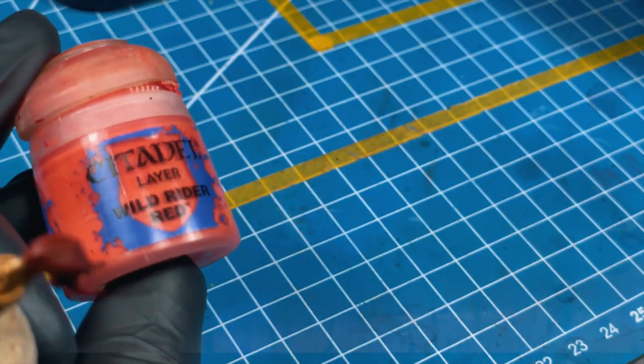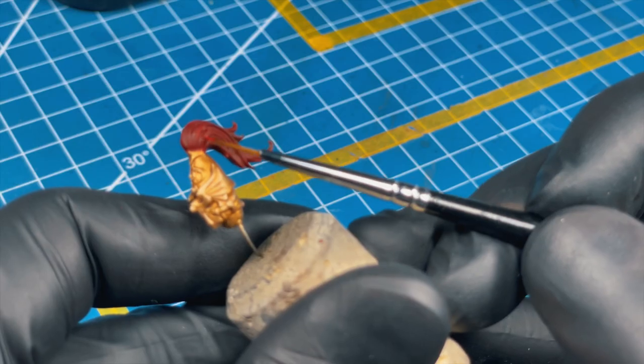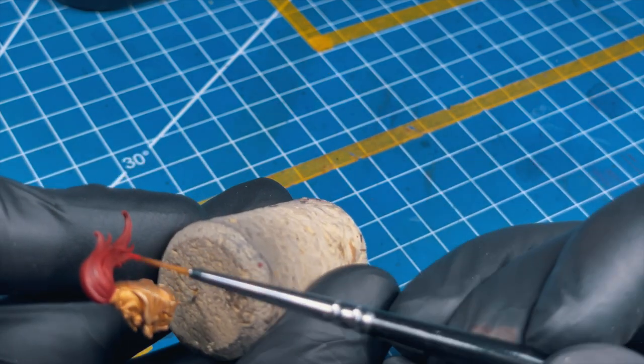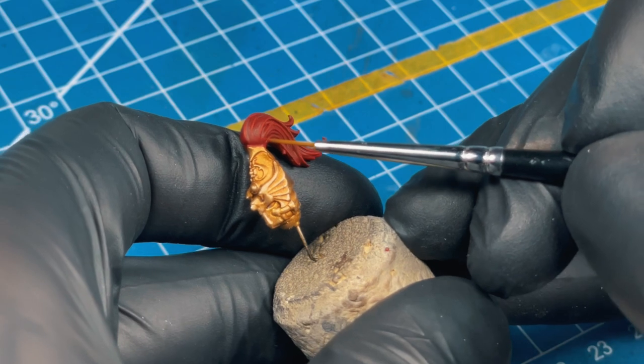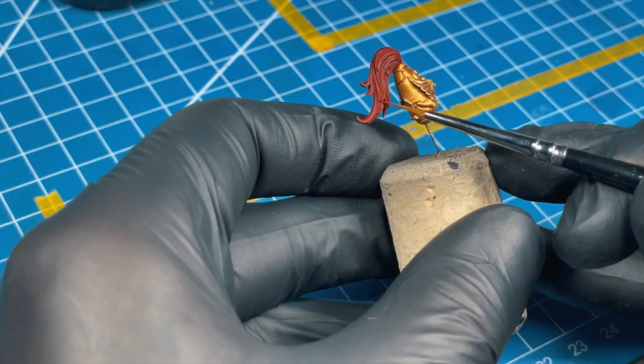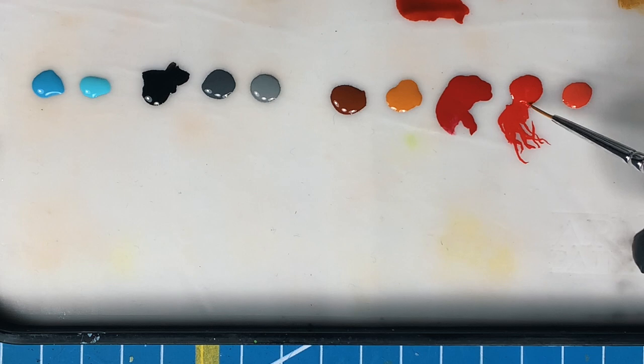For your first highlight here, go for Evil Sunz Scarlet. Go for your precise brush like size one or even zero with a long bristle with a nice tip—it's really important. Using like a 45-degree angle, place the first highlight over the hair of the ponytail.